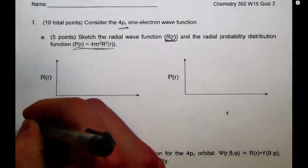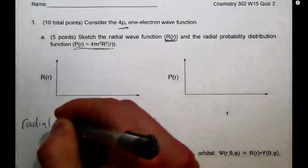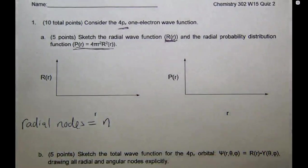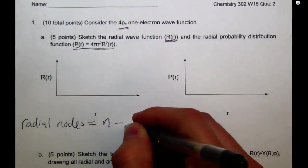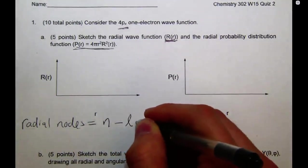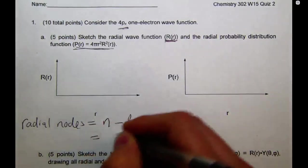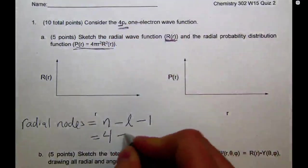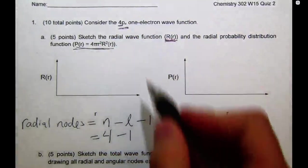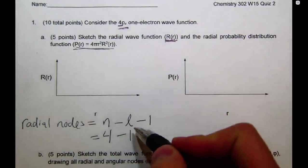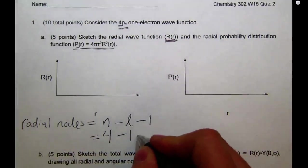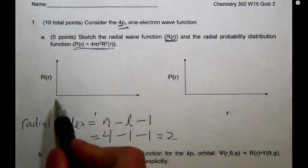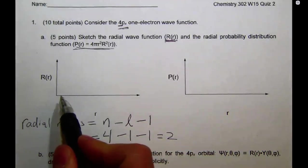The formula for radial nodes is radial nodes equals principal quantum number n minus angular momentum quantum number l minus 1. For us, that equals 4 because we're talking about 4px minus 1 because a p orbital has an angular momentum quantum number of 1 minus 1 equals 2. So that means the graph of our radial wave function needs to cross the axis two times.